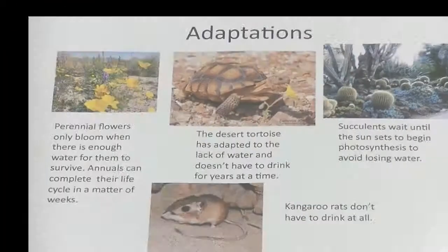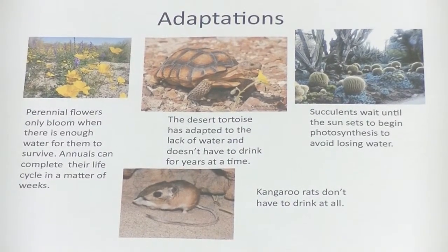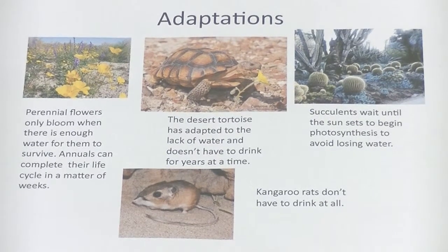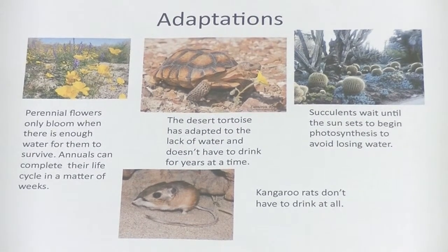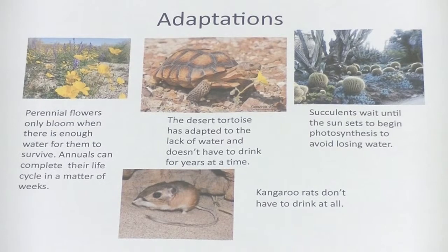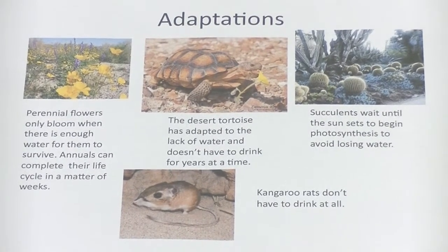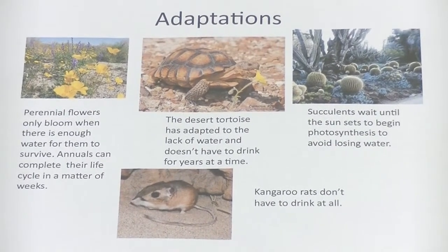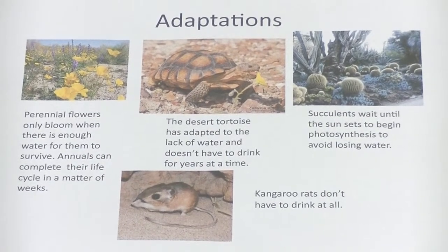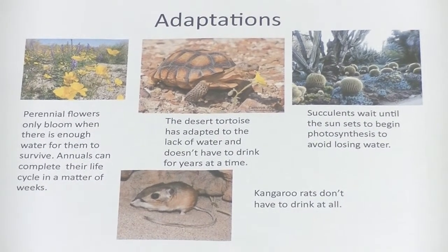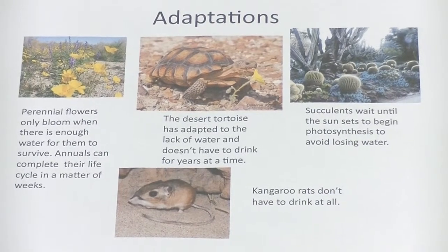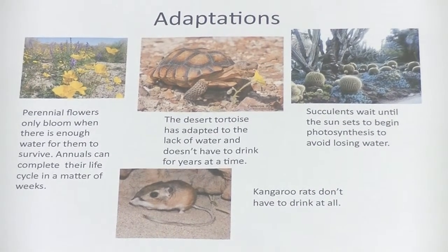Since the desert is such a harsh place, plants and animals have to have many adaptations to survive. Perennial flowers only bloom when there is enough water for them to survive, and annuals can complete their life cycle in a matter of weeks. The desert tortoise has adapted to the lack of water and doesn't have to drink for years at a time. Kangaroo rats don't even have to drink at all. Succulents wait until the sun sets to begin photosynthesis to avoid using water.